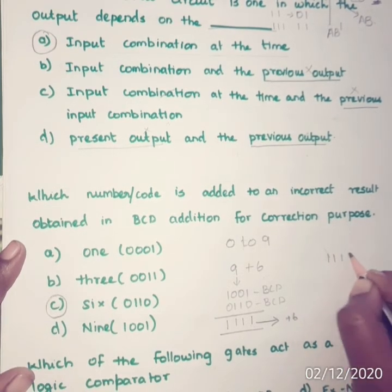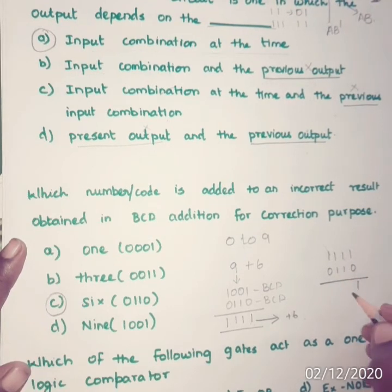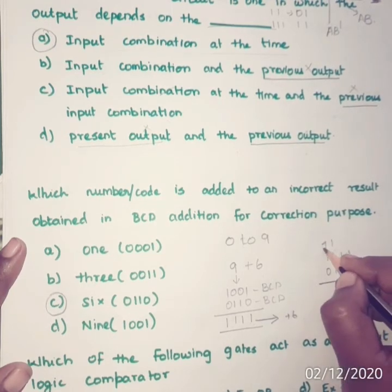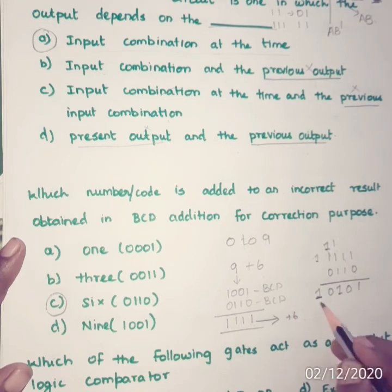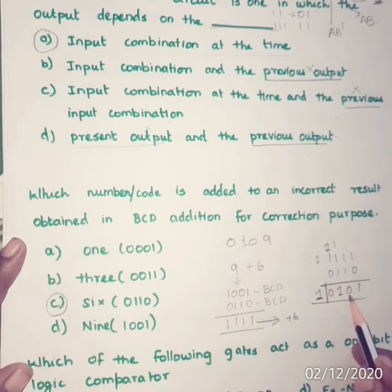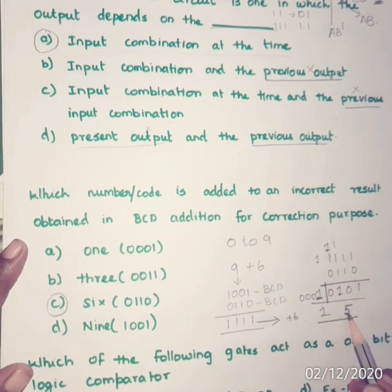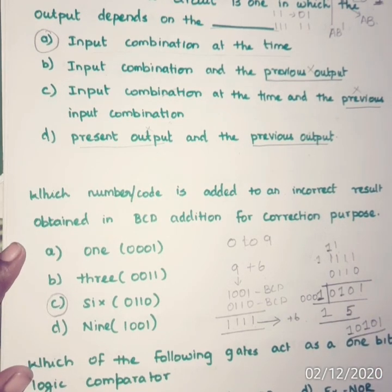Adding 1111 and 0110 (binary 6): the result is 1 0101. Splitting this into 4-bit groups: the lower 4 bits are 0101, which is 5, and the upper bits give 0001, which is 1. So the result is 15, which is correct. The valid BCD representation is 1 0101, confirming that adding 6 corrects the invalid BCD sum.